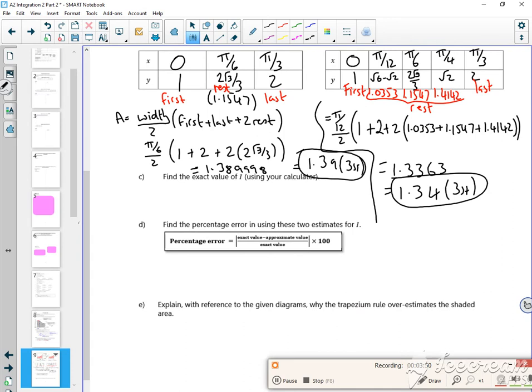So the exact value, if you use your calculator, so the integral from 0 to π/3 of 1 over cos x, if you put that in your calculator, it's 1.317 roughly. You can see we're getting closer to it, and that's the important thing.